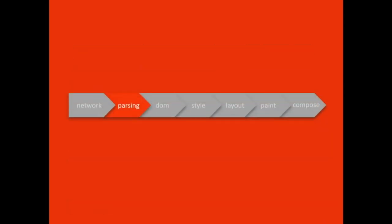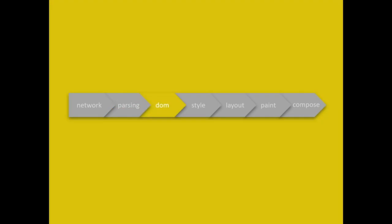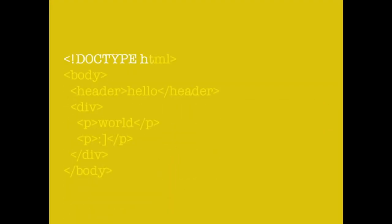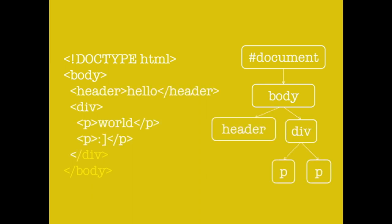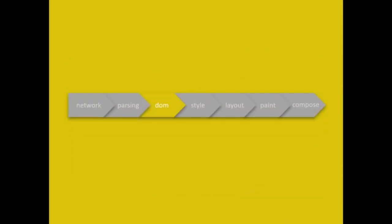Once everything's been parsed, we go to tree generation — either DOM or CSSOM. As it scans through your code, it generates a tree-like structure. If you've ever used Babel or any other code transpiler, this is the part where your code is being transformed. Once you have an object representation of your code, you can modify or interpret it. This is what you interact with when you do document.getElementById.